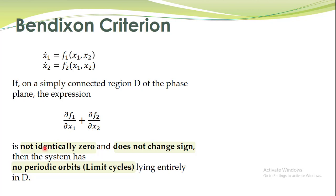So if this expression is not identically zero and does not change sign — what does that mean? 'Does not change sign' means: at some time instants it is positive and at others it is negative, so it is changing sign. 'Does not change sign' means either it is positive for all values of the states, or negative for all values of the state variables. So if it does not change sign and is not identically zero, then no limit cycle can exist in domain D.